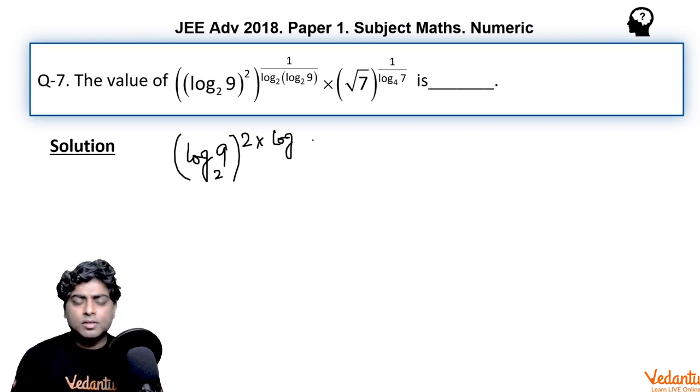It can be written as log, now the base will be log 9 to the base 2, which is again a number, the index would be 2. And the second term is 7 raised to the power half, root 7, into you can again interchange the base and index, log 4 to the base 7.